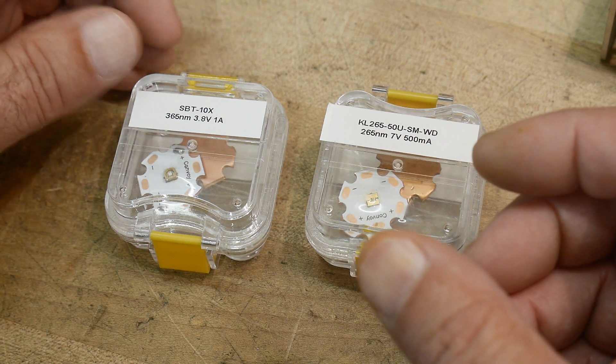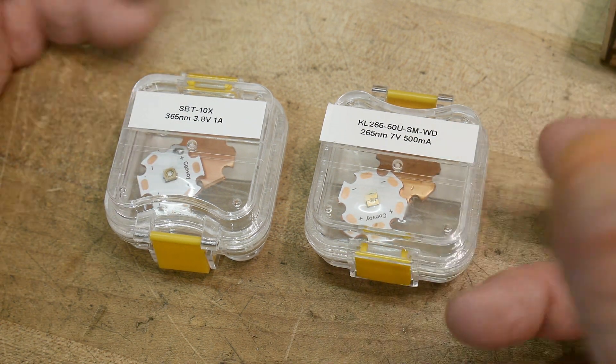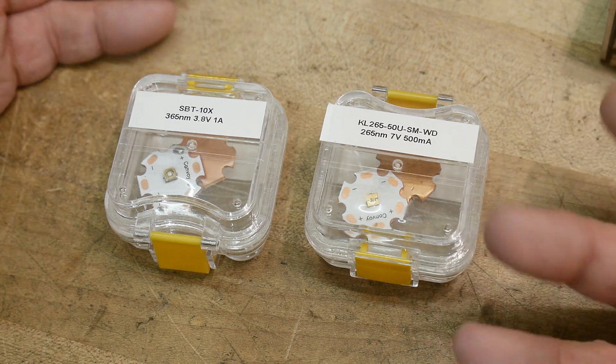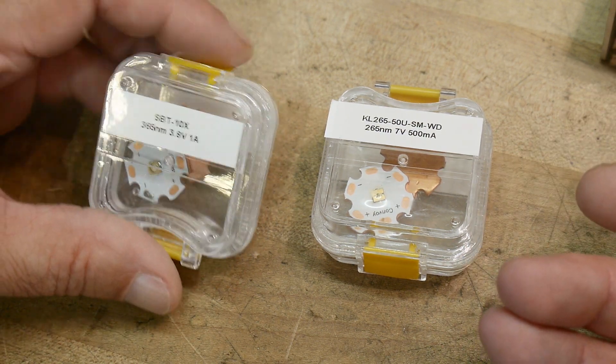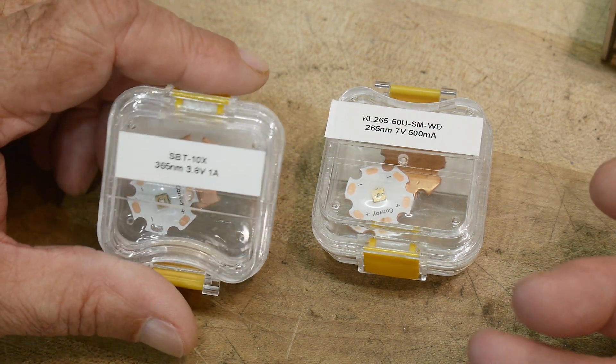And so ultraviolet radiation is capable of bleaching things. You leave something outside, it'll bleach white, or it'll give you a sunburn, or do other types of things.